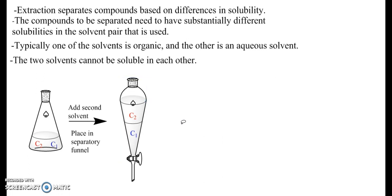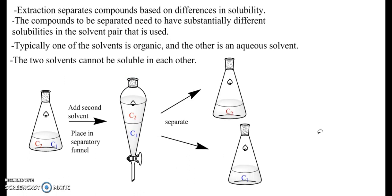And in this case, the compound C2 is more soluble in the upper phase, which is typically our organic phase. So C1 in the aqueous, C2 in the organic. We then separate our two layers and end up with C1 in one flask and C2 in another flask, and effectively we've separated our two compounds.